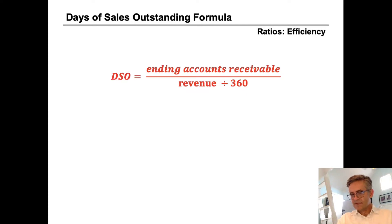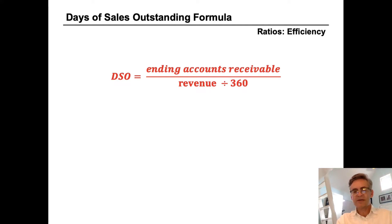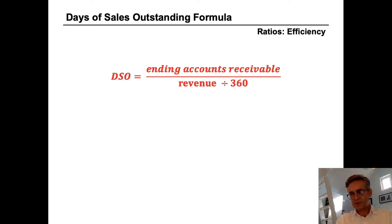Sometimes we see DSO called average collection period or receivable days, and these all mean the same thing. What we're measuring here is the average amount of time it takes a company to collect from its customers. In general, the shorter time to collect is better.